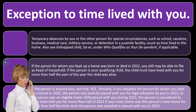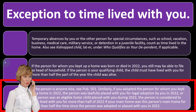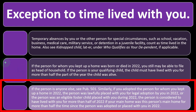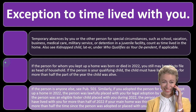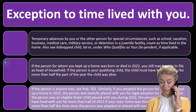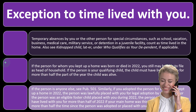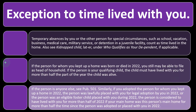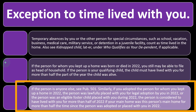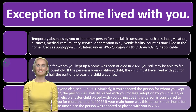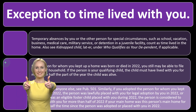If the person is anyone else, see Publication 501 on irs.gov. Similarly, if you adopted the person for whom you kept up a home in 2022, the person was lawfully placed with you for legal adoption in 2022, or the person was an eligible foster child placed with you during 2022, the person is considered to have lived with you for more than half of 2022 if your main home was this person's main home for more than half the time since adoption or placement.